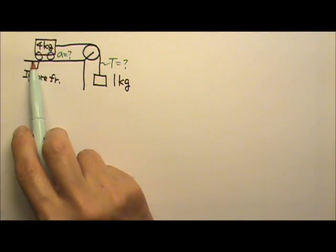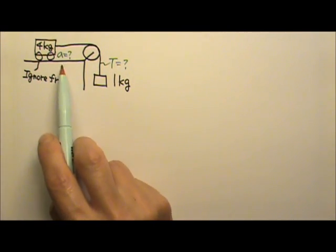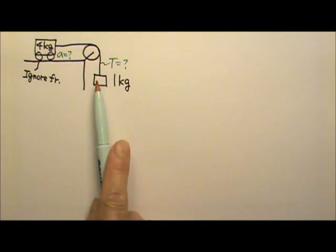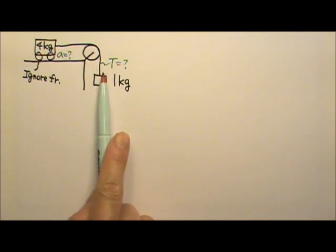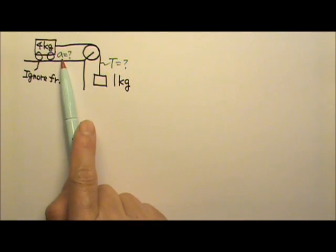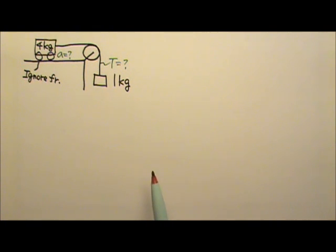There is no friction, so it's really slippery over here. So any little force pulling on this side will make the system go down. We're looking for the system's acceleration and the tension in this string.